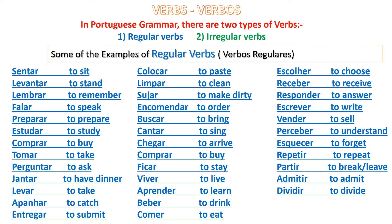Ficar – To stay. Viver – To live. Aprender – To learn. Beber – To drink. Comer – To eat. Escolher – To choose. Receber – To receive. Responder – To answer. Escrever – To write. Vender – To sell. Perceber – To understand. Esquecer – To forget. Repetir – To repeat. Partir – To break or to leave. Admitir – To admit. Dividir – To divide.